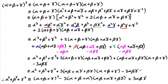Finally, rearranging to make alpha cubed plus beta cubed plus gamma cubed the subject — by moving terms to both sides — we arrive at: alpha plus beta plus gamma all cubed, minus three lots of alpha beta plus alpha gamma plus beta gamma times alpha plus beta plus gamma, plus three alpha beta gamma. That completes the proof of the identity.